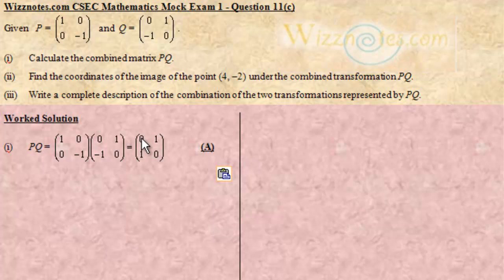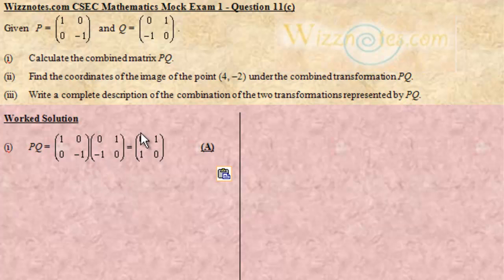The first element is in the first row and the first column, so we multiply the first row of the first matrix by the first column of the second matrix. That's 1×0 = 0, and 0×(-1) = 0, so 0+0 = 0. For the first row, second column element, we multiply the first row by the second column: 1×1 = 1, and 0×0 = 0, so the result is 1.